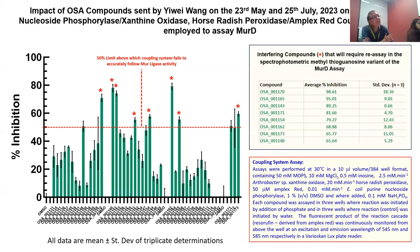All 45 compounds were screened for inhibition of the coupling system. Compounds showing greater than 50% inhibition of the coupling system — OSA001170 down to OSA001140 — would potentially register as false hits in the MurD assay, so they are being screened separately in an assay with less sensitivity to coupling enzyme inhibition. The remaining compounds were screened against MurD from Pseudomonas.